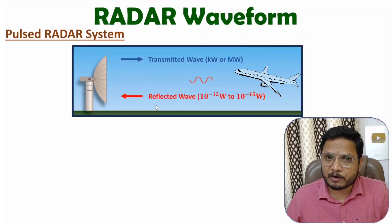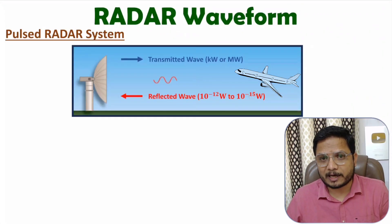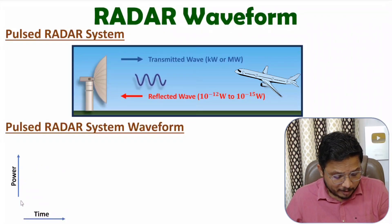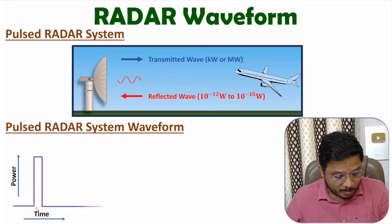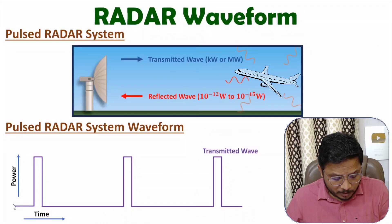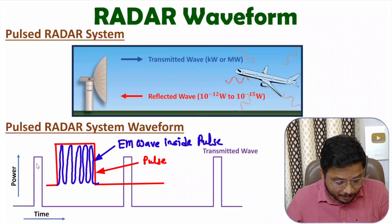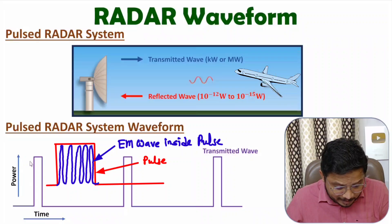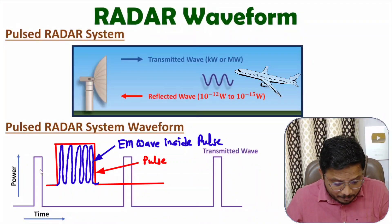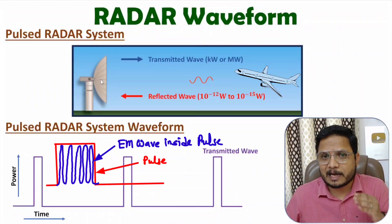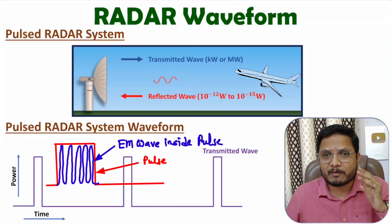Now I will explain that with respect to the waveform, which will give you more clarity. In the waveform, on the y-axis I will be considering power, and on the x-axis, time duration. Let us talk about the transmitted signal — you can observe that during this pulse, we are transmitting the EM wave. Inside this pulse, with this antenna, we will be transmitting a high frequency signal.